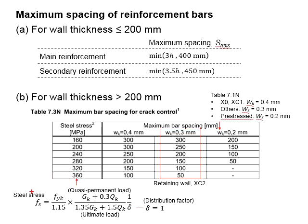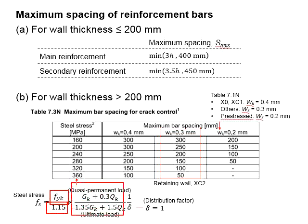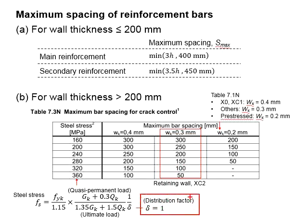To check crack spacing, first determine the stress in the reinforcement using the given equation. The stress is calculated as the specified yield strength divided by the partial factor of safety, multiplied by the ratio of quasi-permanent loads to the ultimate load. It is normally assumed that the factor of distribution equals one.